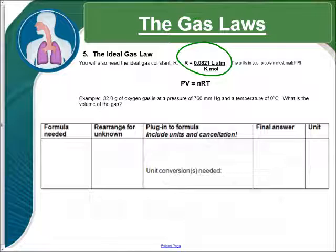So, as we read our problem, 32 grams of oxygen gas is at a pressure of 760 millimeters of mercury and a temperature of 0 degrees Celsius. What is the volume of the gas? As we read our problem, 32 grams of oxygen, that's going to be N. We're going to have to convert it first, so we'll come back to it.